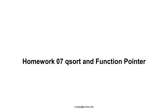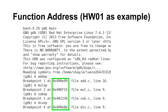We have seen pointers for data. A pointer is a variable whose value is a memory address. Inside a computer, every line of a program also has an address. This example comes from the first homework — inside GDB, when you set a breakpoint, you can see numbers like 0x40-something. These are the addresses of the starting points of functions. The starting point of each function has an address.